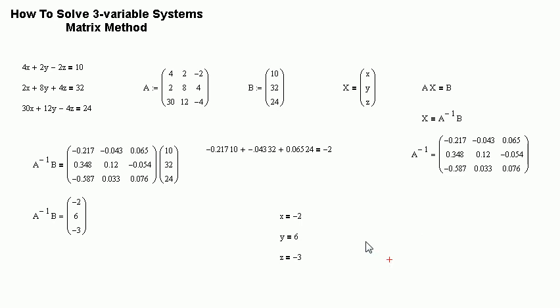Same process with the 2 variable matrix method, except now there's just an extra column. It's just more math. The arithmetic is the hardest part.